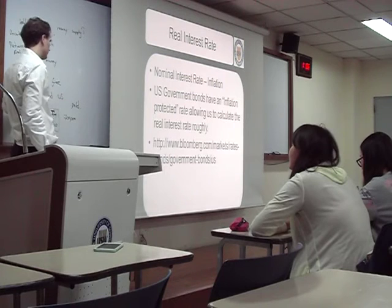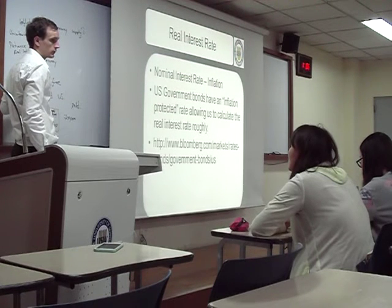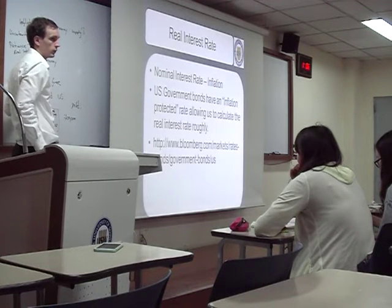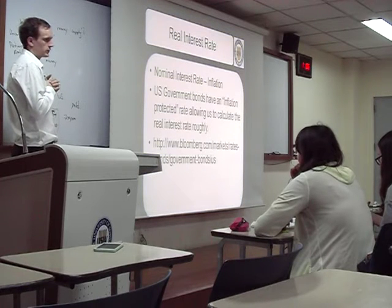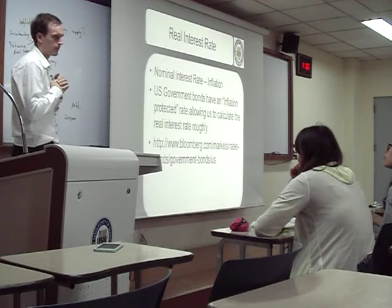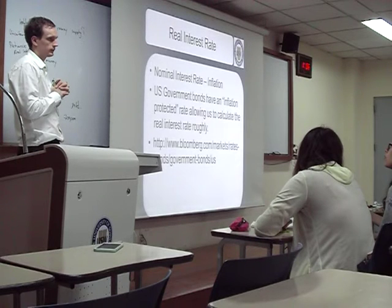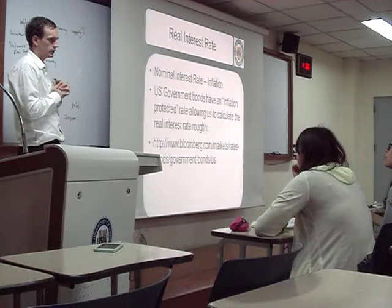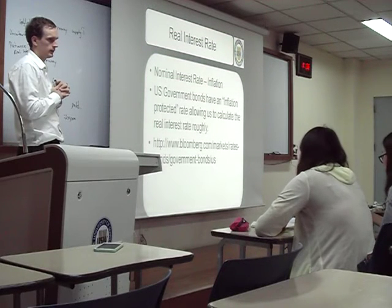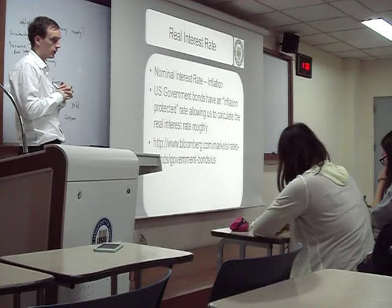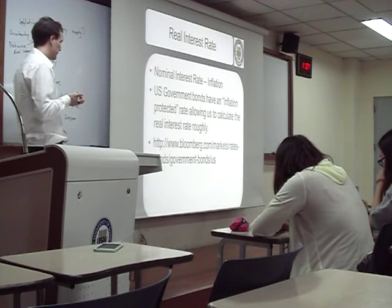We say the US government bond is risk-free, but other government bonds are not. German and Swiss government bonds are also risk-free. Why are those risk-free and Greek bonds are not? They have a stable government. Also the economy is stable — the US has many big companies like Microsoft, Amazon, Coca-Cola, McDonald's. They can tax those companies and pay back the money.